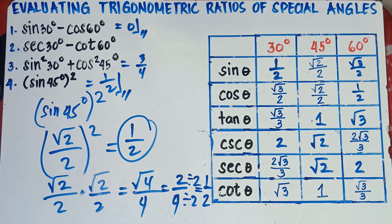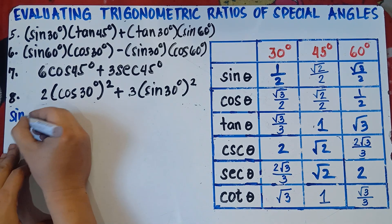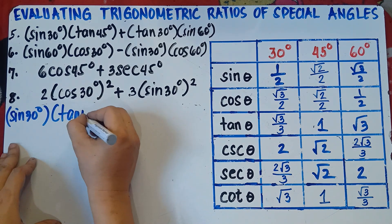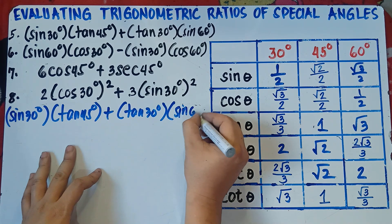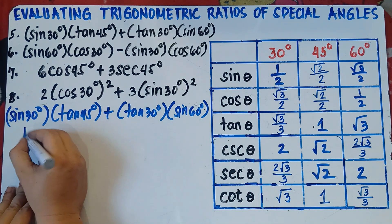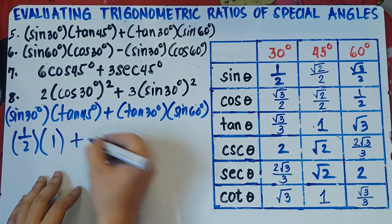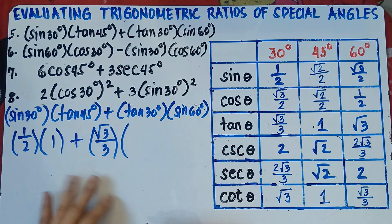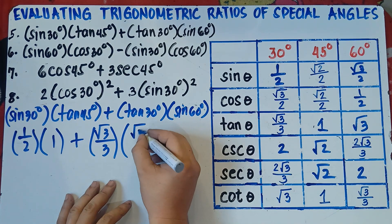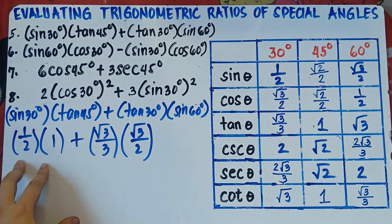Let's proceed to number 5: sine 30 degrees times tangent 45 degrees, plus tangent 30 degrees times sine 60 degrees. Sine 30 degrees is 1/2, tangent 45 degrees is 1, tangent 30 degrees is √3 over 3, and sine 60 degrees is √3 over 2. Multiplication comes first before addition, so multiply each pair.